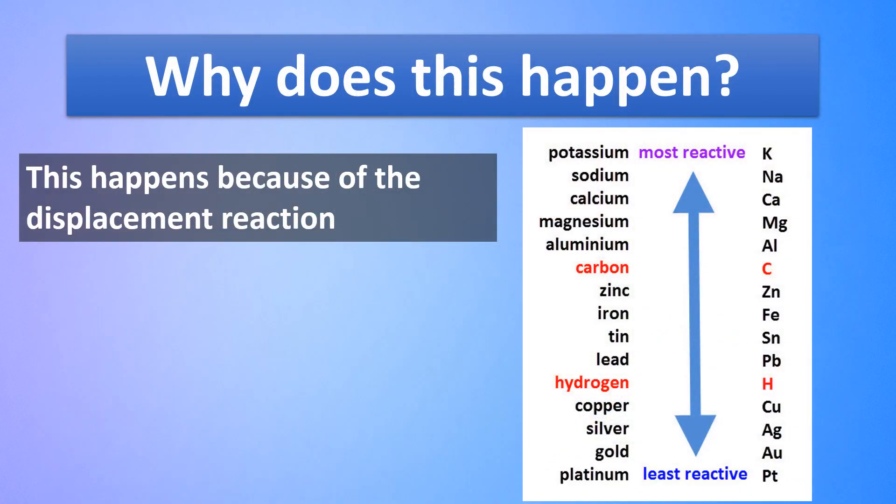So, why does this colour change happen? This happens because of the displacement reaction. Now, before I go further into the definition of displacement reaction, let's look at the reactivity series of metals. Here, we see that iron is more reactive than copper.